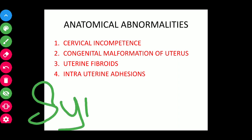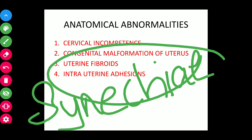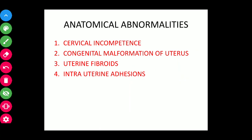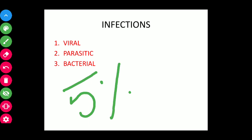The final anatomical abnormality is intrauterine adhesions, also called Asherman's syndrome. These interfere with implantation, placentation, and fetal growth. The impact depends upon the severity of the adhesions.